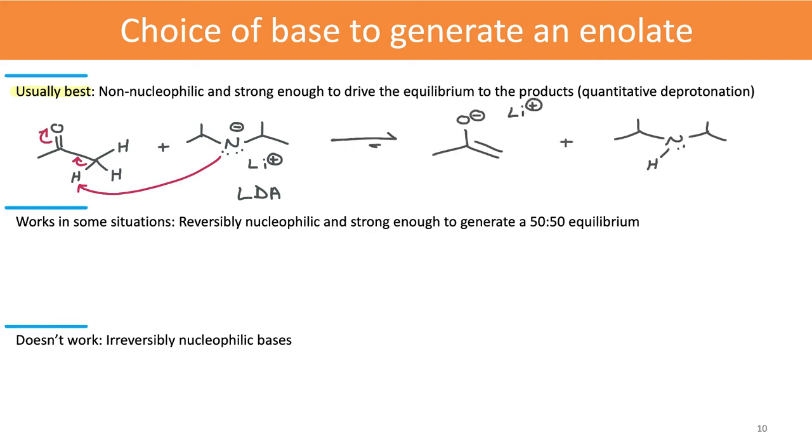We can compare the pKa values just to double check that the equilibrium will in fact drive over to the product side. The pKa of that alpha proton is going to be about 20, and the pKa of the protonated amide, the amine, is going to be about 38 or 40.